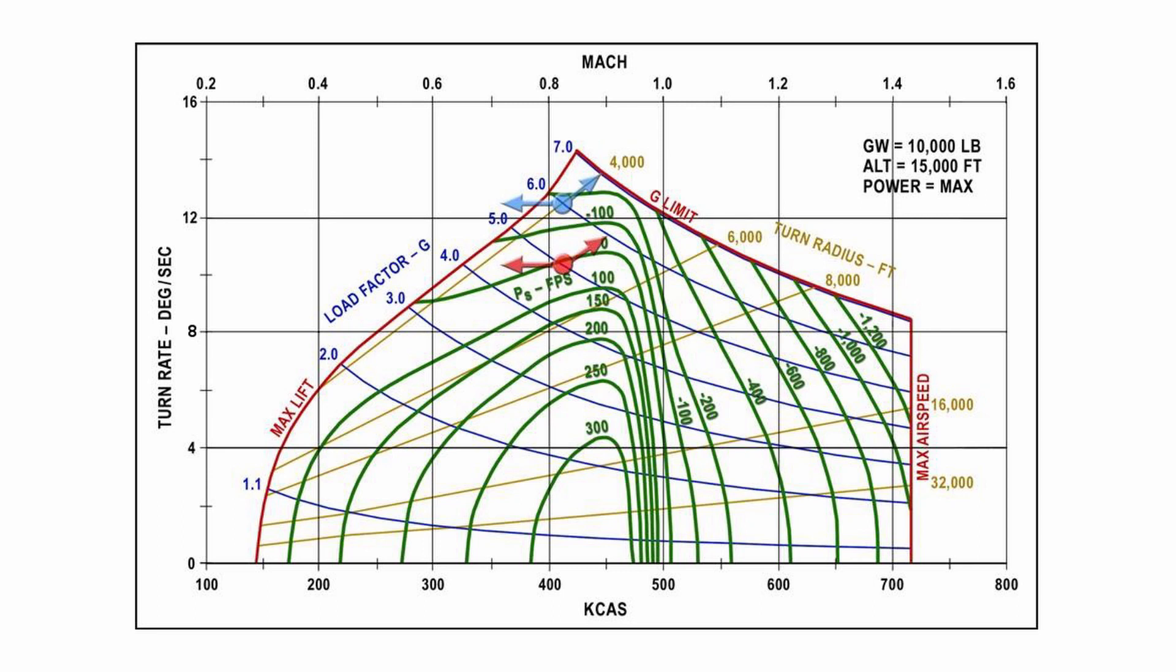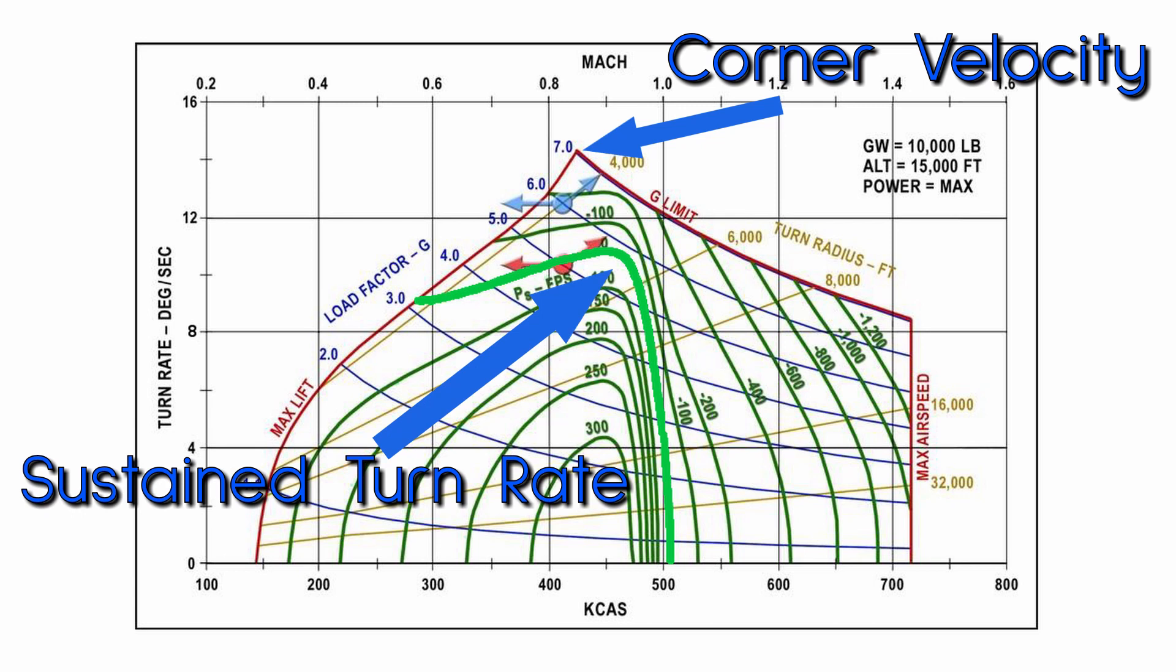We also went over the various lines on the charts, like the red airframe limits, the yellow turn radius lines, G loads in blue, and the excess power or PS lines in green. Then we covered corner velocity and sustained turn rate. It's important to remember that corner velocity is temporary and sustained can be held.